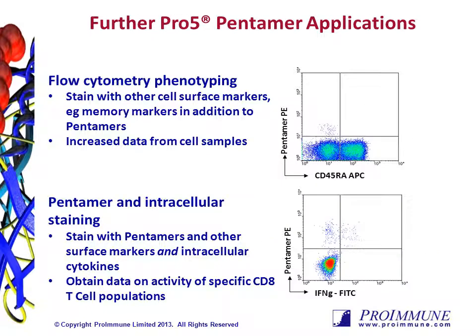Pentamers can be used in association with other cell surface markers, for example memory markers. This allows you to determine more information about the specific T cell population — here we see that the majority of the pentamer positive cells are CD45RA low, which is indicative of a memory phenotype. Pentamers can also be used in association with intracellular cytokine staining, and on the bottom flow plot we can see how the pentamer positive population is split between interferon gamma high and low, allowing a better breakdown of the immune response being studied.